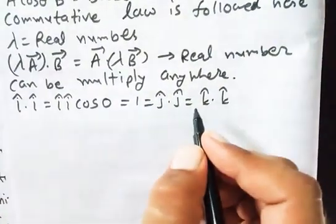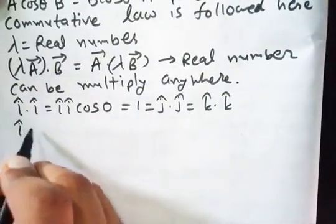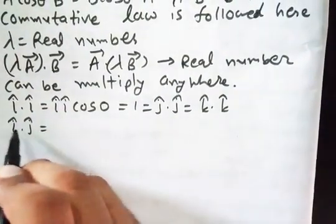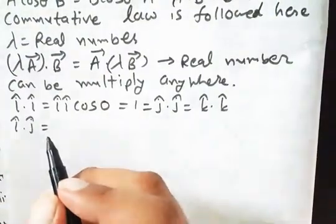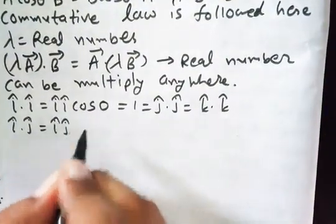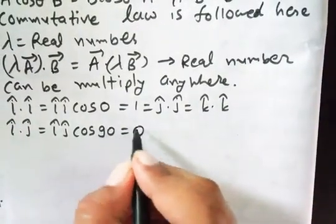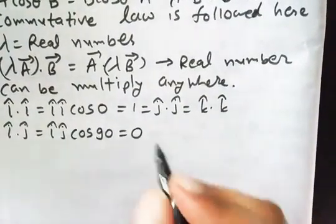Now if I am taking the dot product of perpendicular vectors - if two are perpendicular, one is x-direction, the other is j-hat meaning unit vector in y-direction. So if there is a dot product of x and y, the angle will be 90 degrees. Cos 90 will be 0, 0 into 1 is 0, so the answer will be 0.